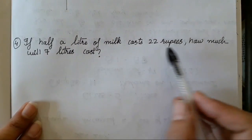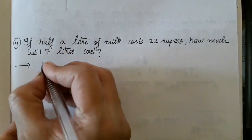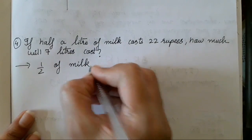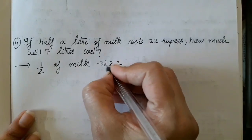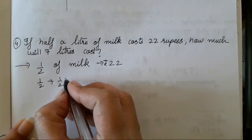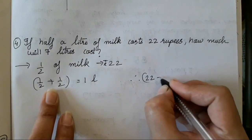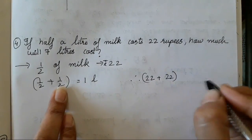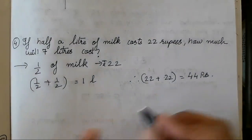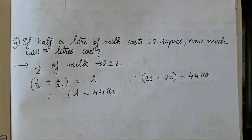Next question: If half a litre of milk costs 22 rupees, how much will 7 litres cost? First, we find what 1 full litre costs. Half litre is 22 rupees, so half plus half equals 1 litre, meaning 22 plus 22 equals 44 rupees. So 1 litre is equal to 44 rupees.